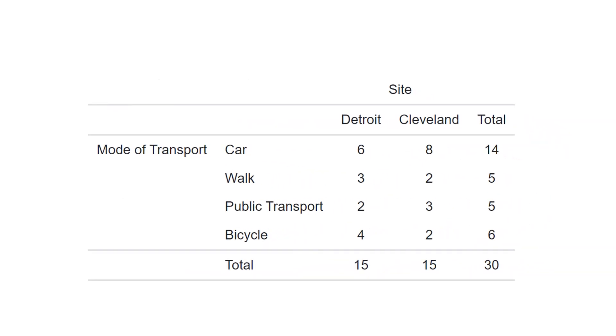A contingency table provides a way to analyze and compare the relationship between two categorical variables. The rows of a contingency table represent the categories of one variable, while the columns represent the categories of another variable. Each cell in the table shows the number of observations that fall into the corresponding category combination.